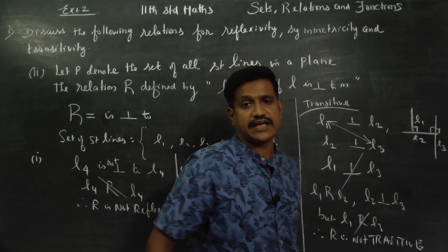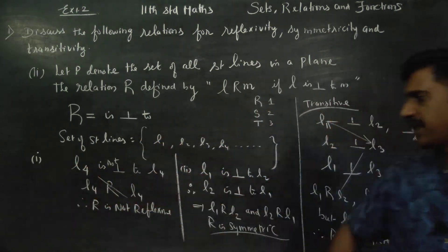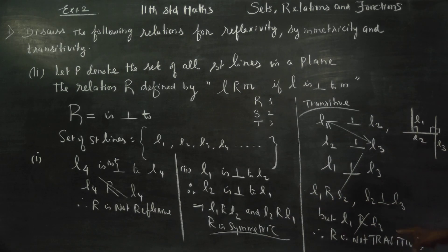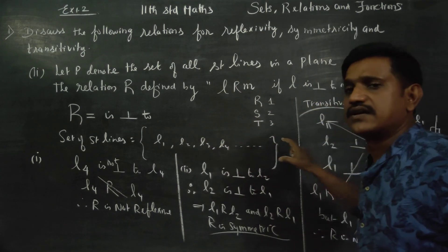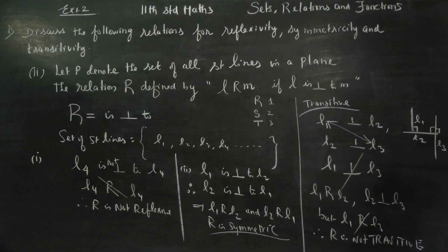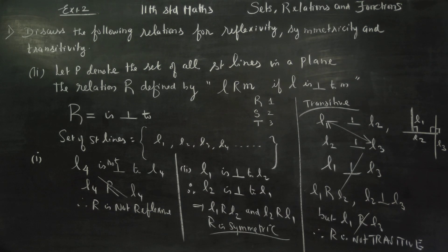To summarize: the first property — not reflexive. The second — symmetric. The third — not transitive. This is a generalized example. Thank you.